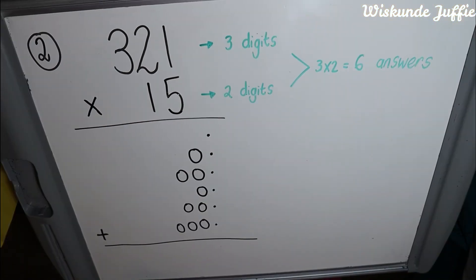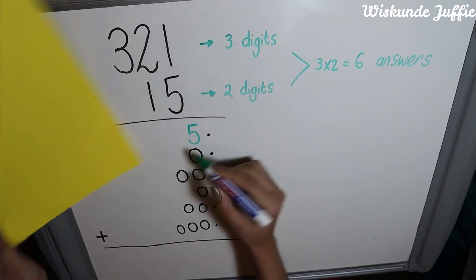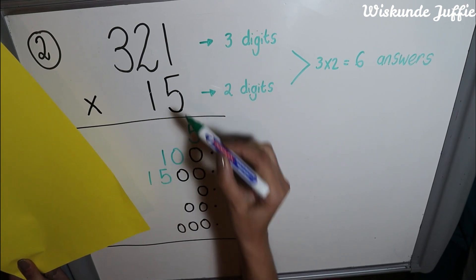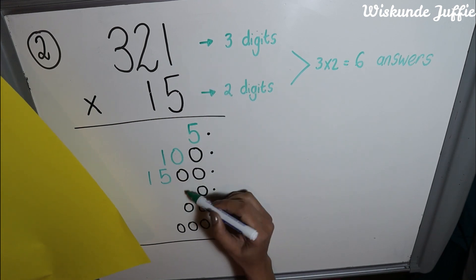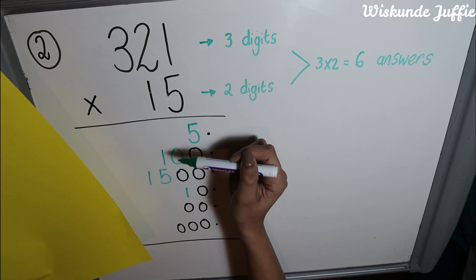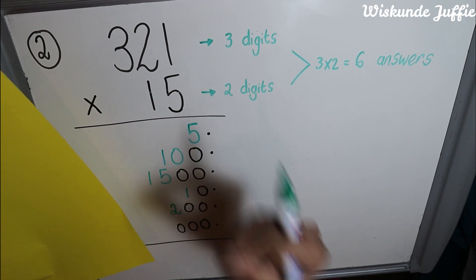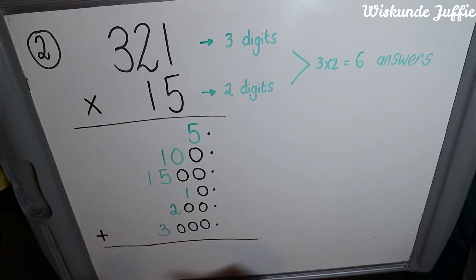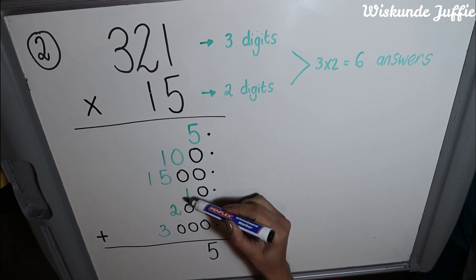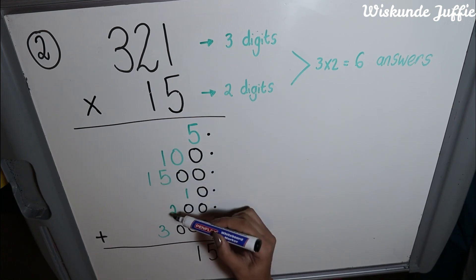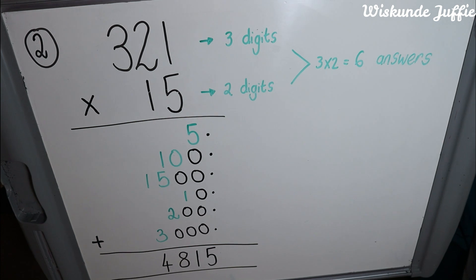My next step is to multiply my numbers, starting with the units. So I will have 5 times 1 which is 5, 5 times 2 which is 10, and 5 times 3 which is 15 — but remember this is actually 5 times 300, which is why it's 1500. Next I will have 1 times 1 which is 10 — remember that's actually 10 times 1. Then 10 times 20: two times one is just two, which makes it 200. Then 3 times 1 is just 3. My final step is to add the numbers in the columns: 5 plus zeros is 5; zero plus zero plus one plus zero is 1; one plus five is six plus two is eight; and one plus three is four. Draw a line to indicate your final answer — and that is the end of the sum.